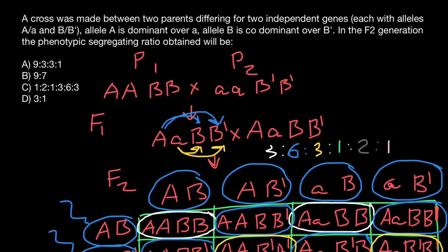Let's return to the problem and check the answer choices. The ratio of phenotypes is 1:2:1:3:6:3, which corresponds to answer C. For those still confused, the order of these numbers is not important — only the ratio matters, and no matter how you rearrange them the ratio is the same. That's all for today — subscribe and see you in the next video. Goodbye!